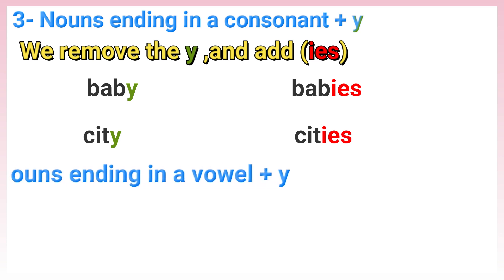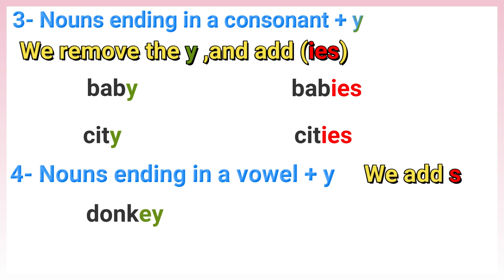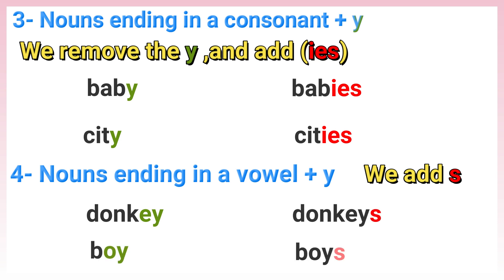Rule 4: Nouns ending in a vowel plus Y — we add S. Such as: donkey → donkeys, boy → boys.